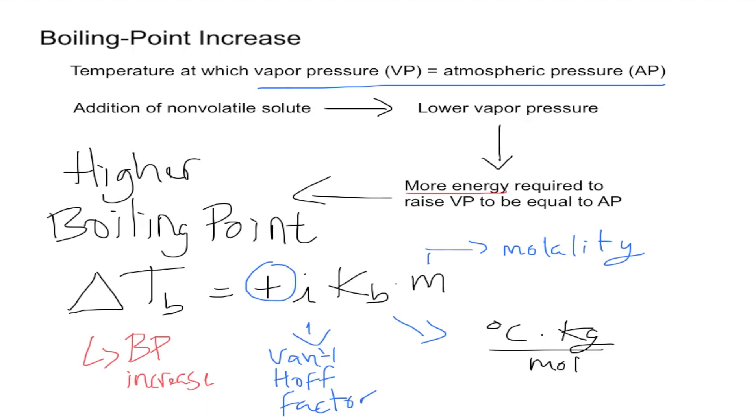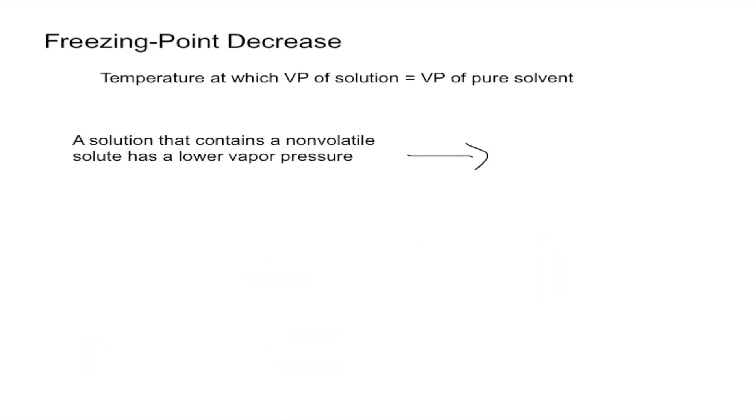Now let's talk about the other colligative property, freezing point decrease. Now we have the freezing point decrease. The freezing point is the temperature at which the vapor pressure of a solution is equal to that of its pure solvent. So the vapor pressure of the solution and the pure solvent have to be equal to reach that freezing point.